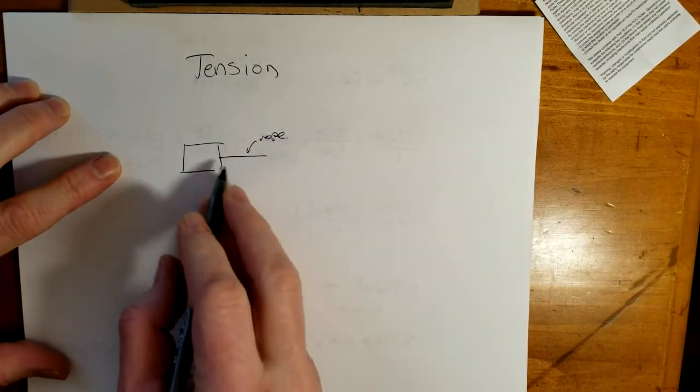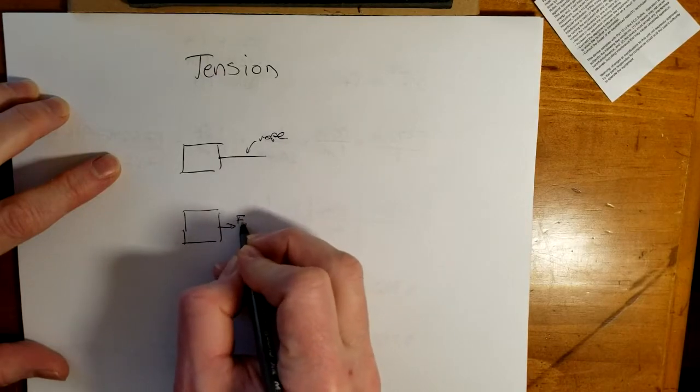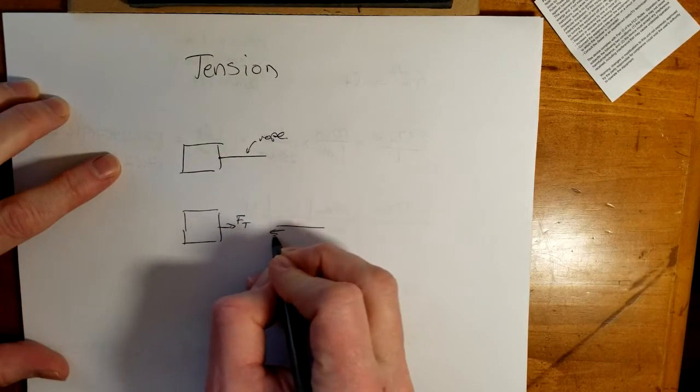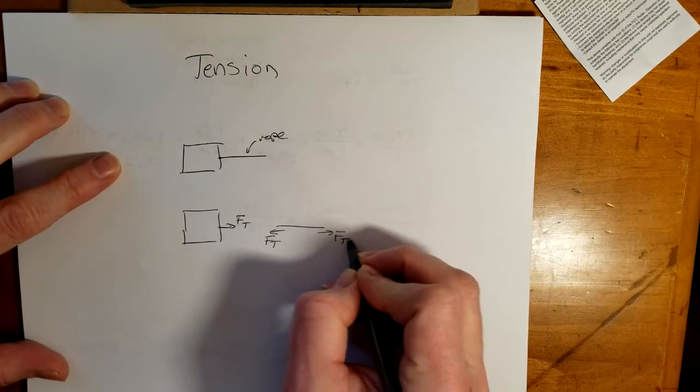We say there's tension on the rope and if we did the force diagram, there's tension pulling on the block to the right and then there's tension pulling to the left on the rope. And presumably there's tension flowing in that direction as well.